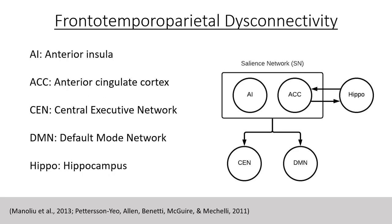The default mode network, or DMN, includes the medial prefrontal cortex, or MPFC, posterior cingulate cortex, or PCC, and the angular gyrus. This network is associated with self-related and internally oriented processes. As an example, the default mode network is highly active during daydreaming or mind wandering. The salience network is hypothesized to mediate switching between the default mode network and the central executive network. Therefore, impairment in the salience network can contribute to problematic switching between internally directed and externally directed cognition.